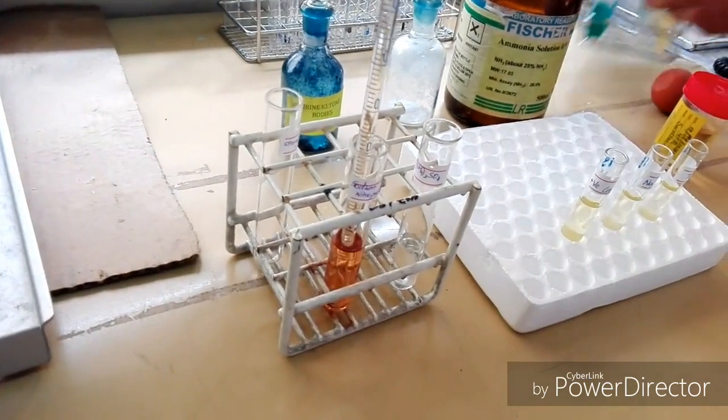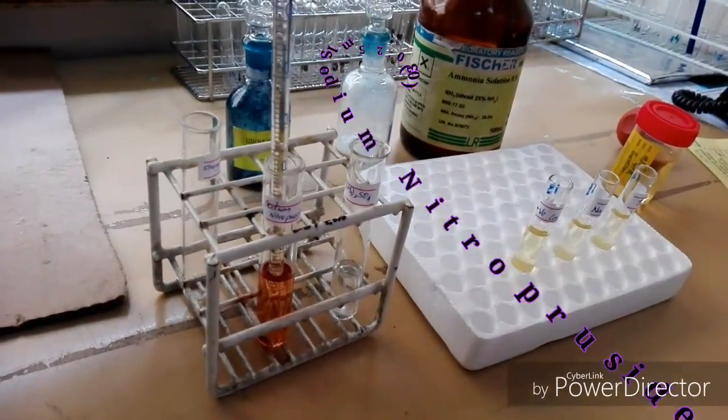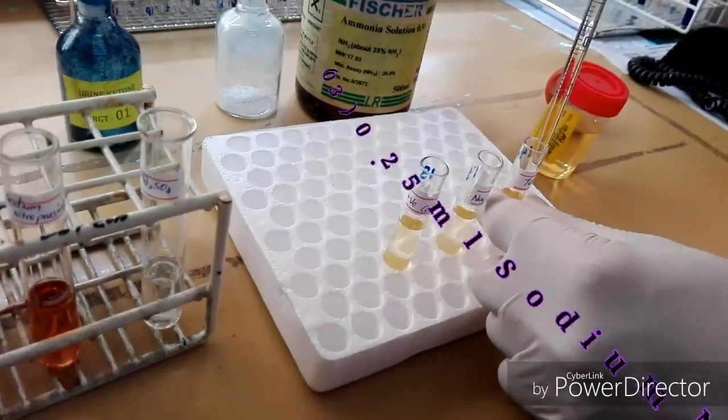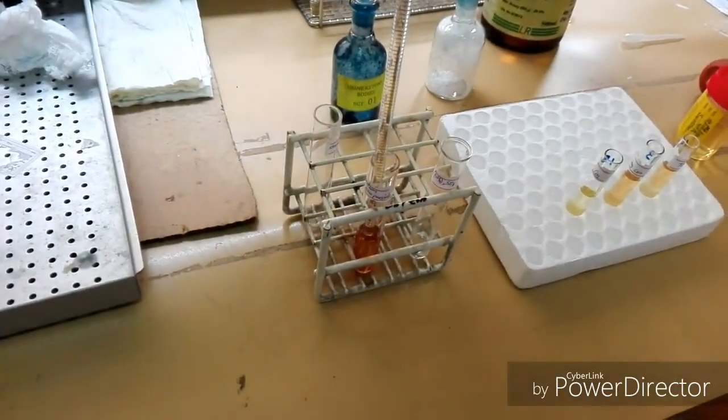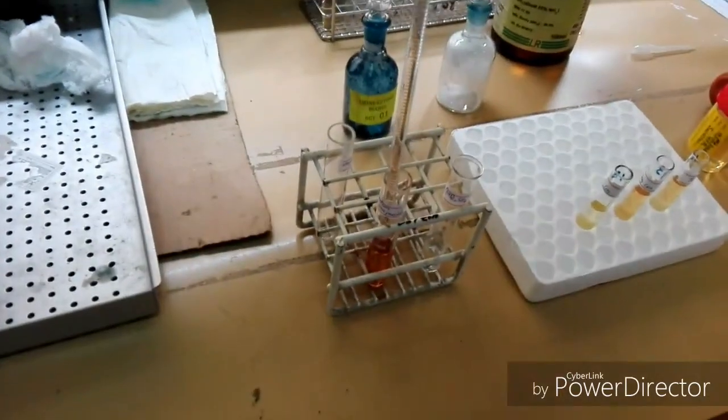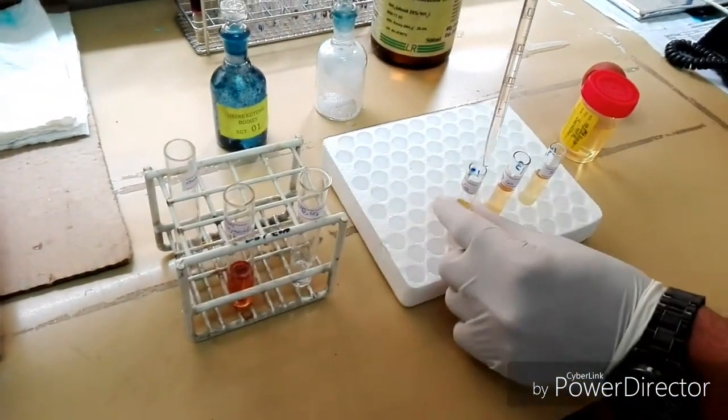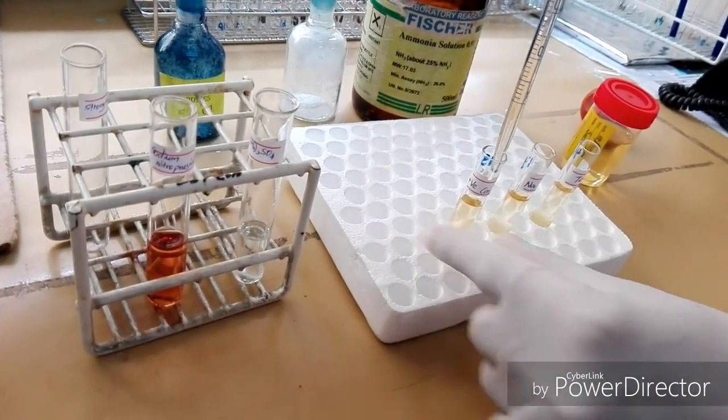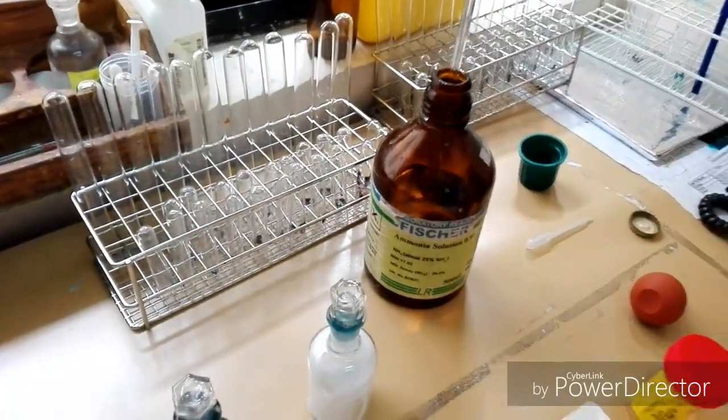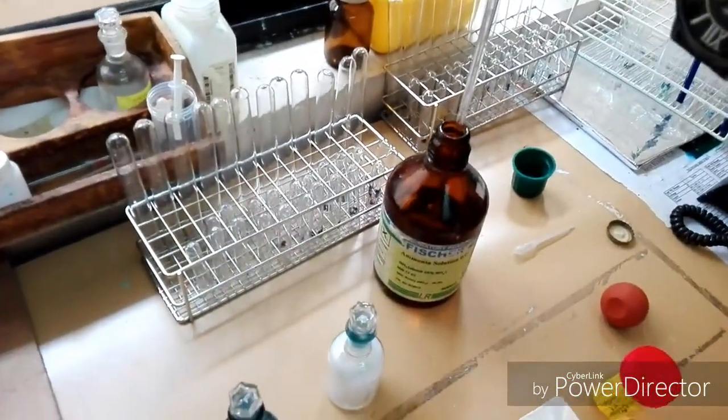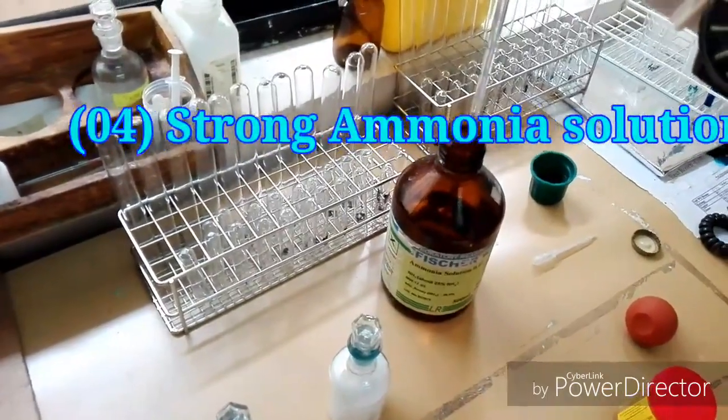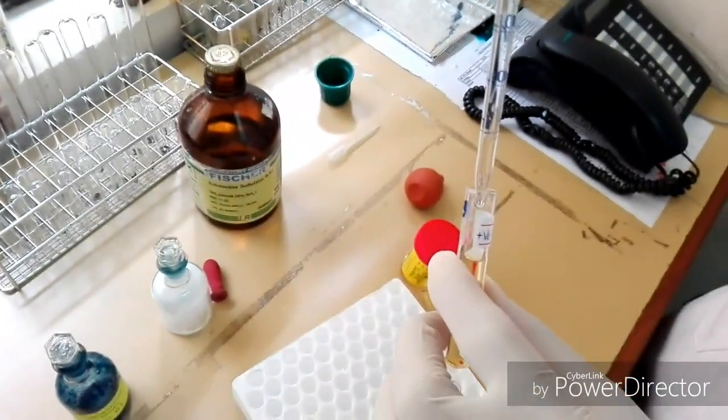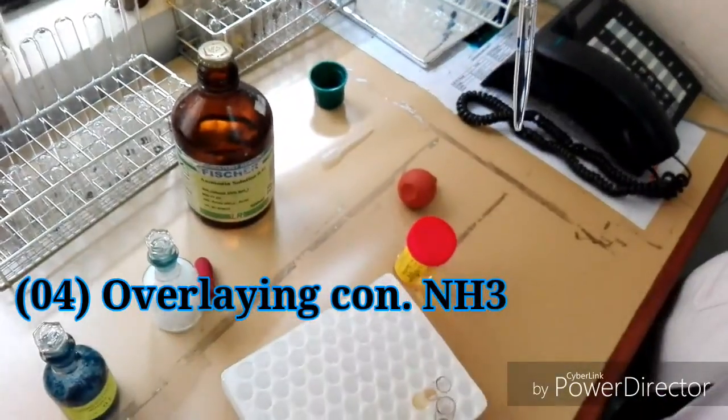Next, we have to add 0.25 ml of sodium nitroprusside solution into these three test tubes. Then we add 2.5 ml of sodium nitroprusside solution. In the presence of alkaline medium, the final step is overlaying the strong ammonia solution.